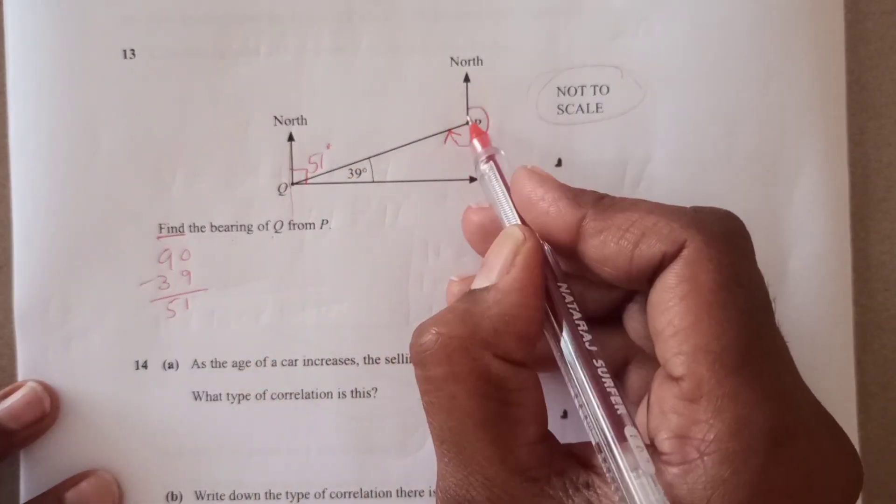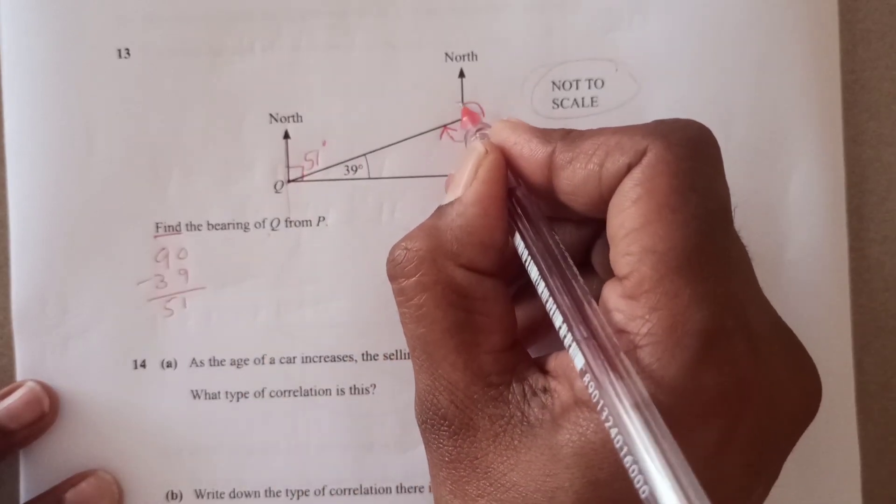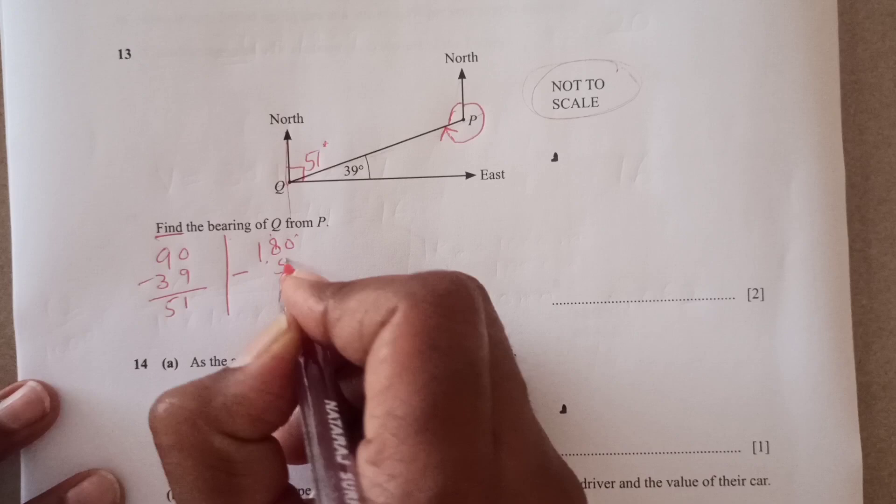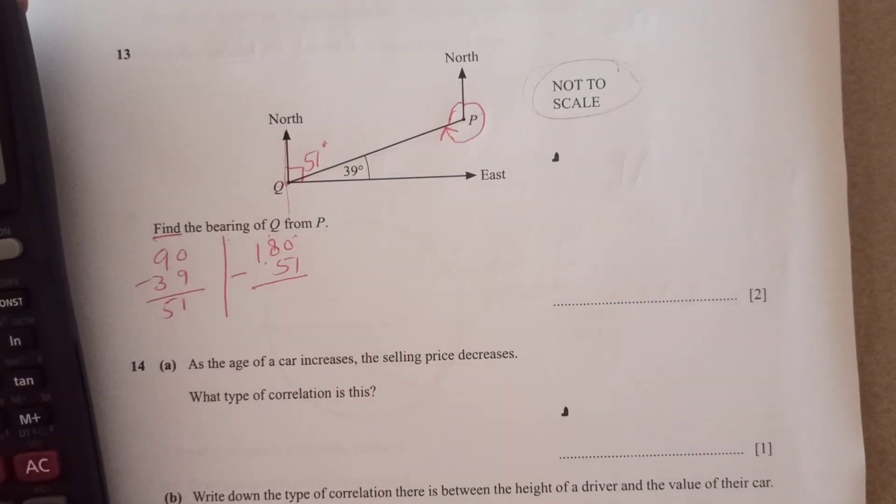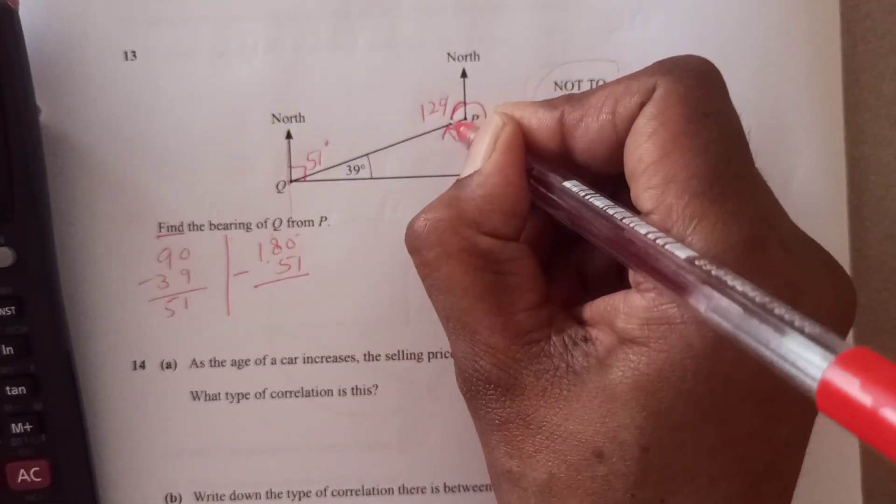So now this line and this line, they are parallel, right? So the co-interior angle. So 180 minus 51 will give us this angle. 180 minus 51, it is 129, right? This angle is 129.